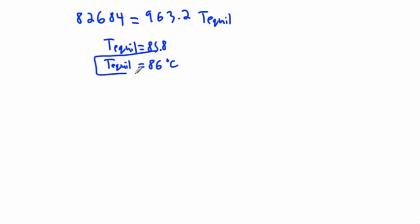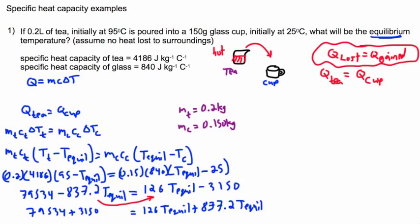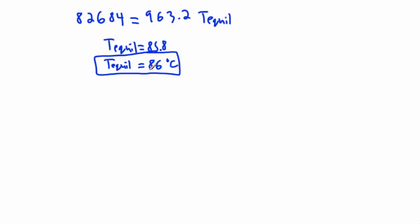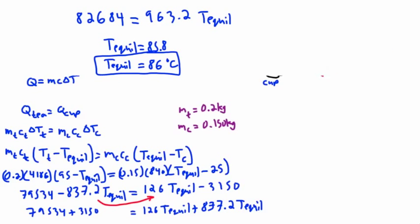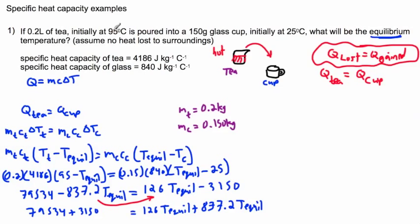So there we go. A little bit long, a little bit gross, but we can totally figure out what the equilibrium temperature is. Do you notice the temperature of 86 is actually quite close to the 95? It started off as 95 degrees for the water and the cup was at 25, and the equilibrium temperature is very close to this one. Why is that?